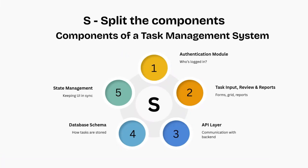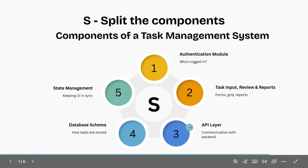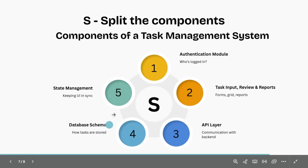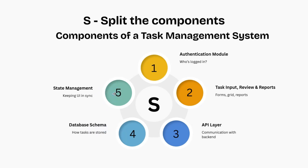Now we get to S — Split into components. This is where you break your system into logical, manageable pieces. Think of components as the building blocks of your system — each one has a specific job and they work together to create the whole. For our task management feature, the components might be: an authentication module, task input, review and reports forms, a list of tasks and reports, an API layer to communicate with the backend, the database schema, and state management to keep the UI in sync.